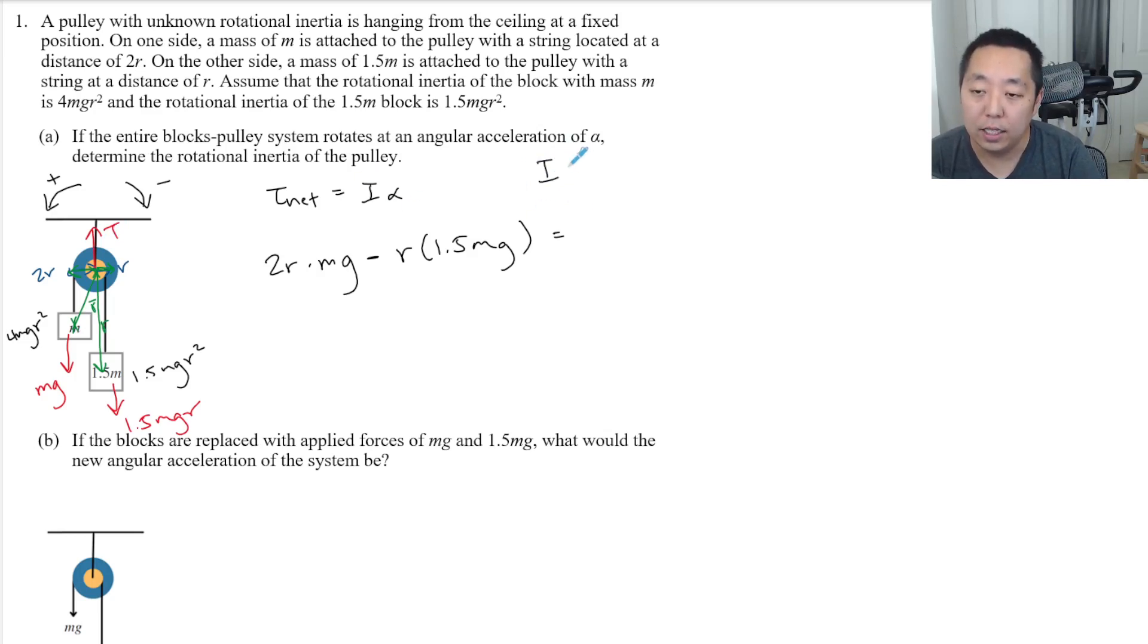So this I is really composed of three components: the I of the pulley plus the I of each block, which they told you was 4 MgR squared and then 1.5 MgR squared. And then that is I pulley plus 5.5 MgR squared.